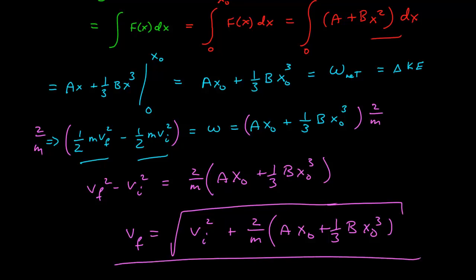And so it's a function of the initial velocity as well as the work done between the origin and the final position. Note that if the final position were back at the origin, that's x naught equals 0, then our v final would equal our v initial, just pointing in the opposite direction, which makes sense.